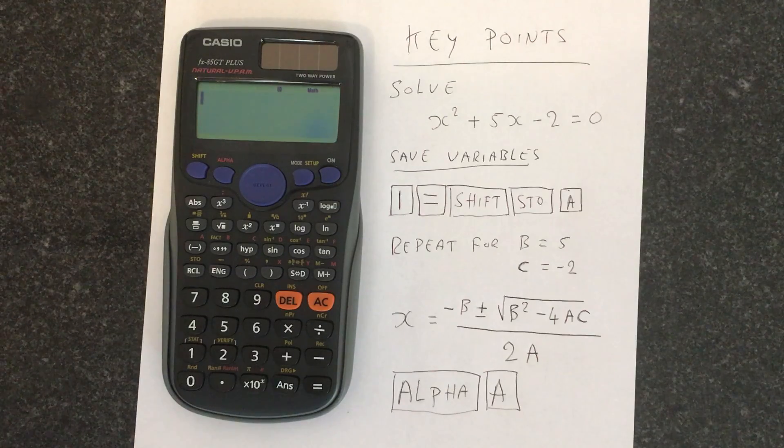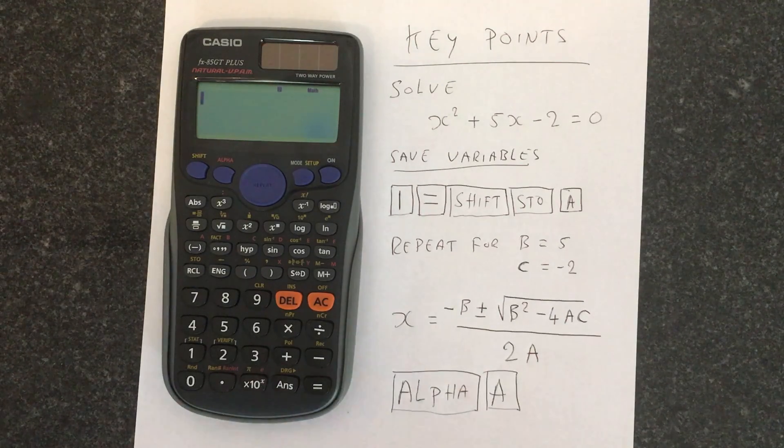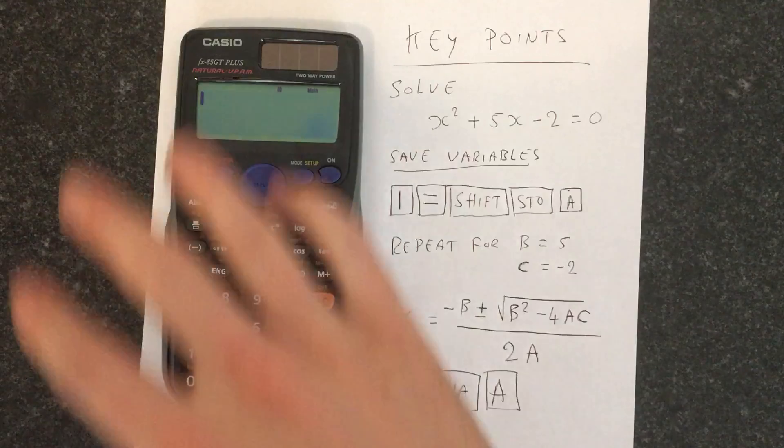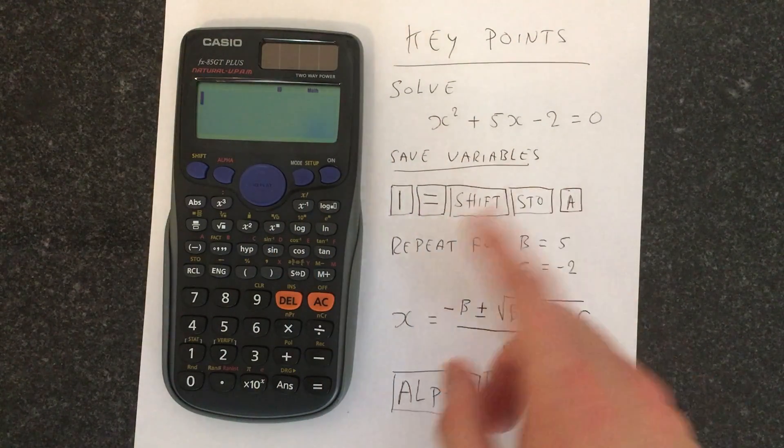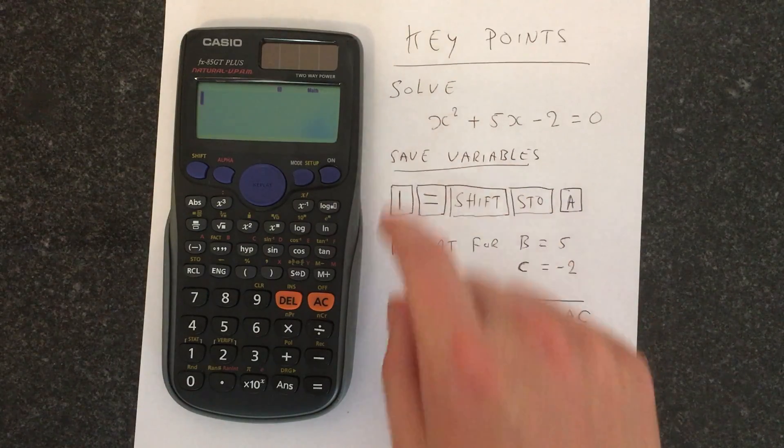So the first step is to save these to the variables. There is no built-in function to do quadratic equations on here, so we're going to have to use the variables. So we're going to start by saving the value for a.